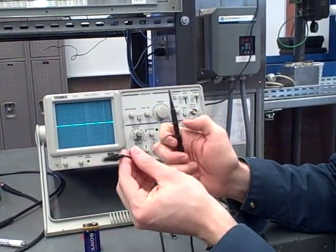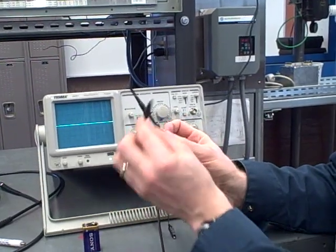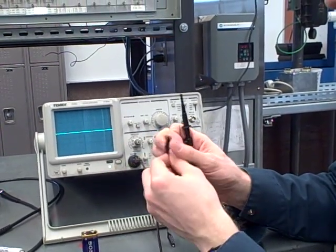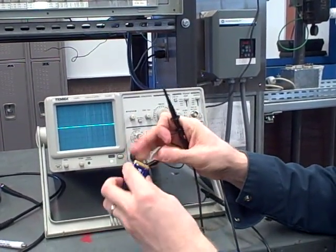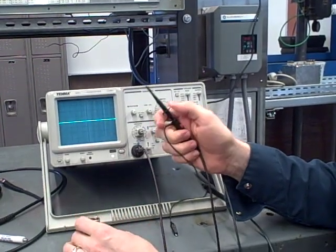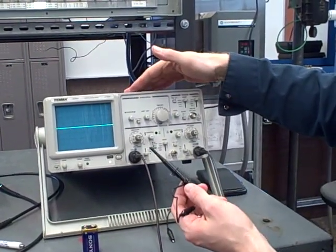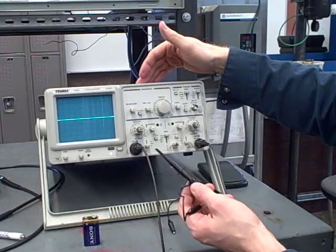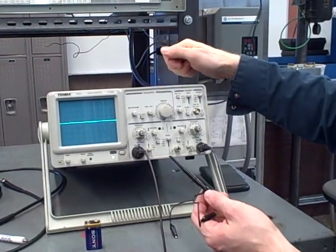But when I make a measurement like that, I'm doing something very important. This ground lead right here that I'm using to make my reference connection to my voltage source actually connects to the chassis of the oscilloscope, and that connects to earth ground through the third prong, the safety prong of my power plug.